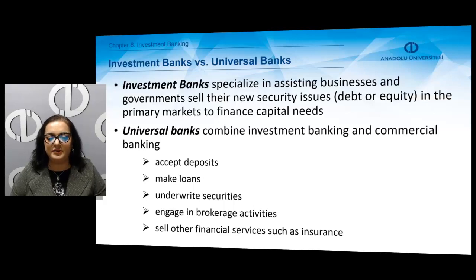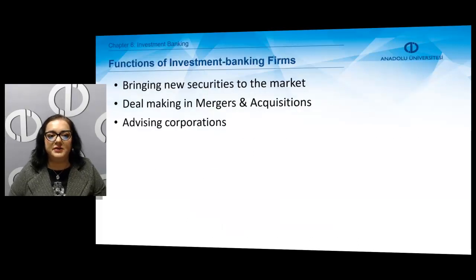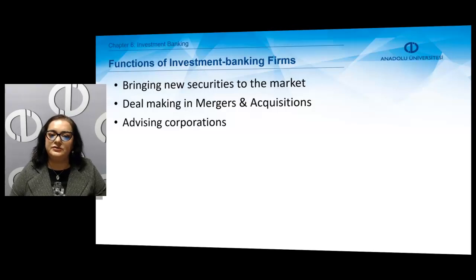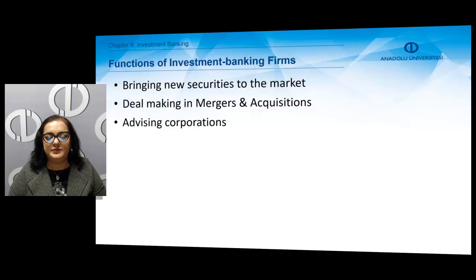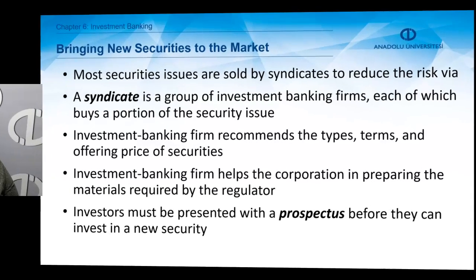Universal banks can accept deposits, make loans, underwrite securities, engage in brokerage activities, and sell other financial services such as insurance. The main functions of investment banking firms are: bringing new securities to the market in the primary markets, assisting in the deal-making process regarding mergers and acquisitions, and advising corporations.